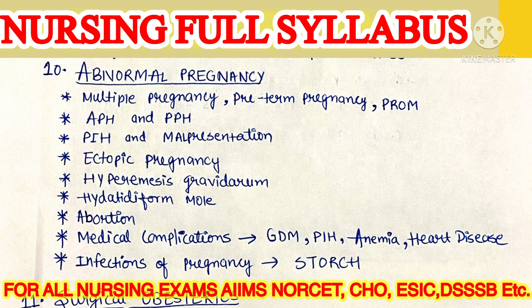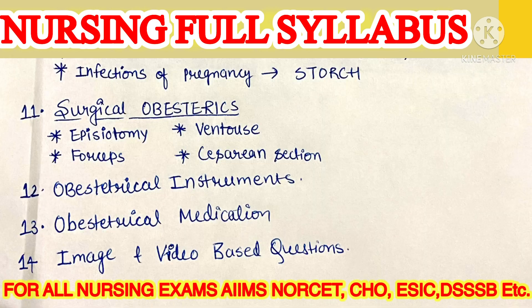Diagram-based questions भी देखने हैं। Abnormal pregnancy topics: multiple pregnancy, preterm pregnancy, PROM (premature rupture of membrane), APH (antepartum hemorrhage), PPH (postpartum hemorrhage), PIH (pregnancy-induced hypertension), malpresentation, ectopic pregnancy, hyperemesis gravidarum, hydatidiform mole, choriocarcinoma, और abortion — including MTP (medical termination of pregnancy)। Medical complications of pregnancy: gestational diabetes mellitus, anemia, heart disease, hypertension। Infections of pregnancy जैसे STORCH — ये भी important हैं।